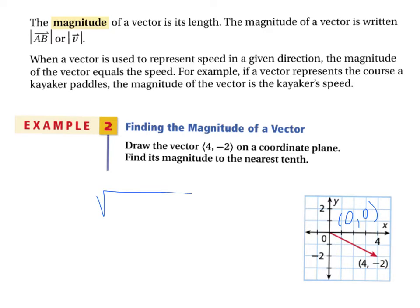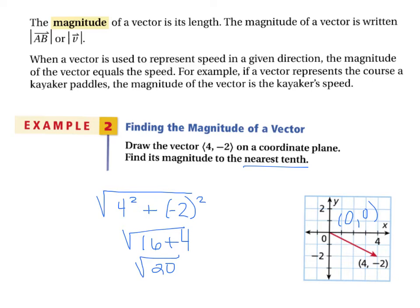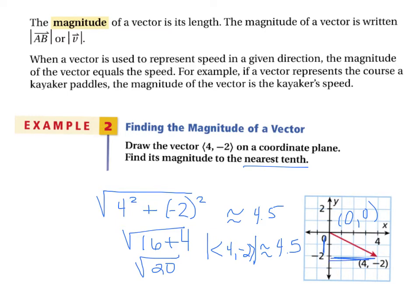Using the distance formula: (4 − 0)² + (−2 − 0)² = 16 + 4 = 20, so the magnitude is √20 ≈ 4.5. We write this as |⟨4, −2⟩| ≈ 4.5. You could also use the Pythagorean theorem with 2² + 4² = c², which would also work.